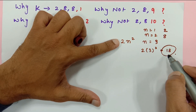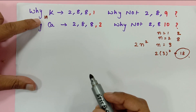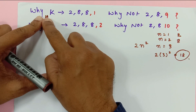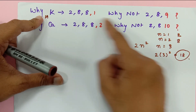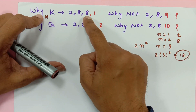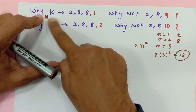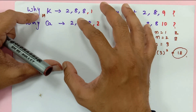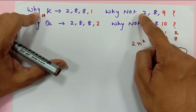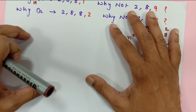So the third orbit can accommodate a maximum of 18 electrons. We know potassium has electronic configuration 2, 8, 8, 1 because it has 19 electrons. First orbit: 2, second orbit: 8 — that's 10 electrons arranged. We have 9 remaining, and the capacity of the third orbit is 18, yet we put only 8 there and the last electron goes to the fourth orbit. Why? As per the rule, it should be 2, 8, 9.